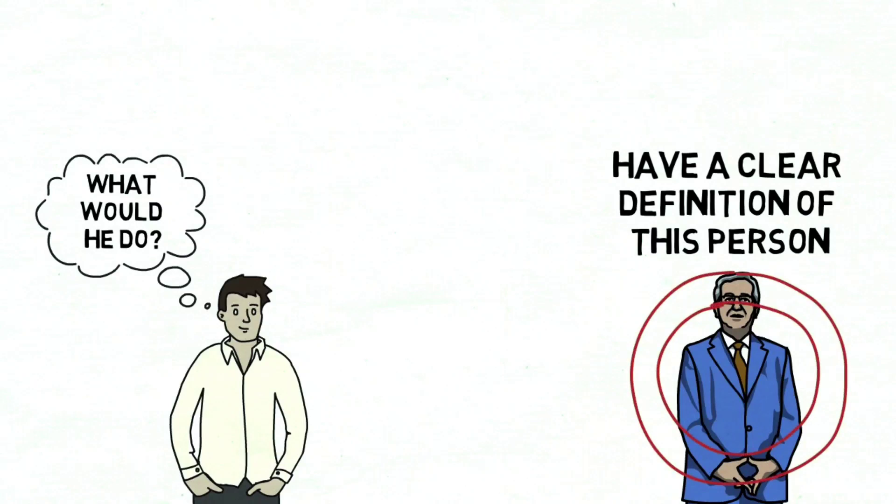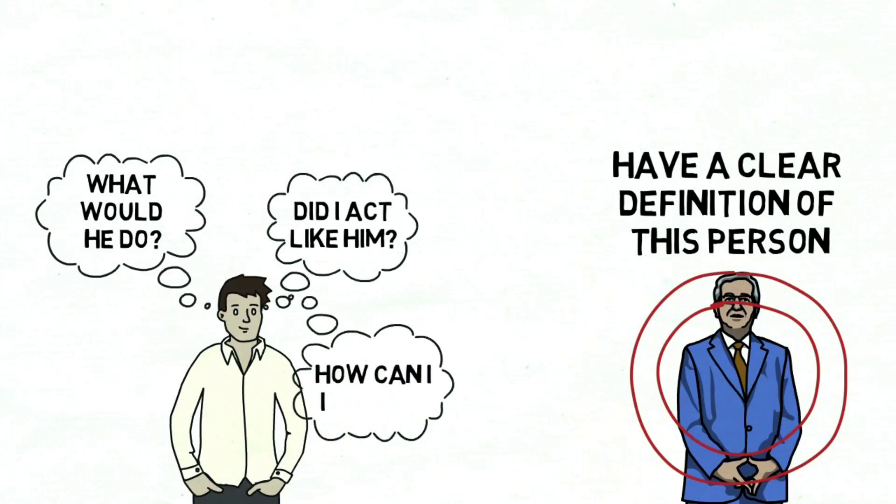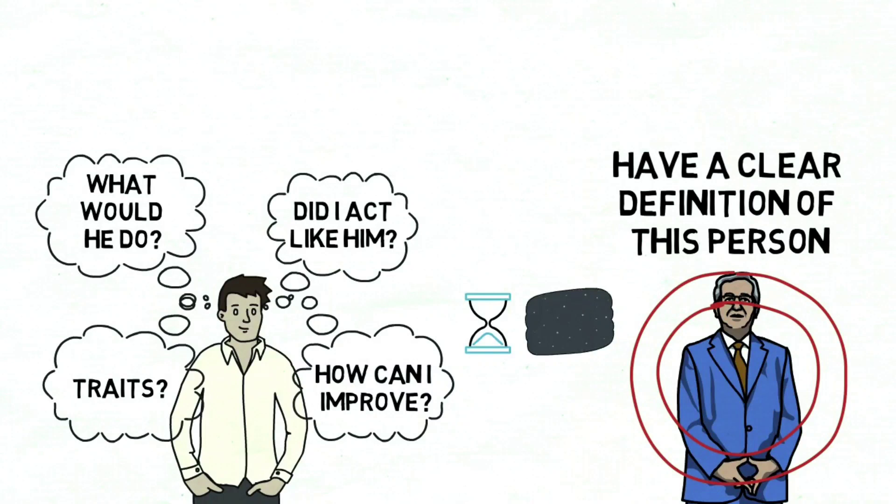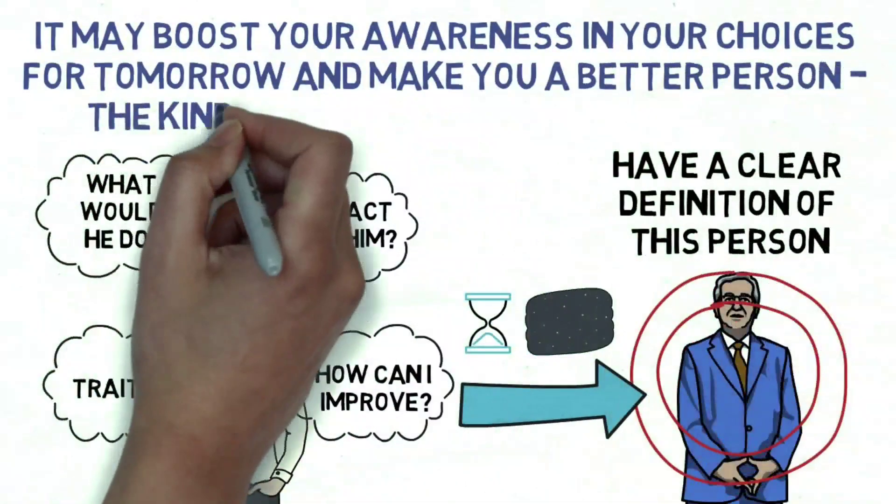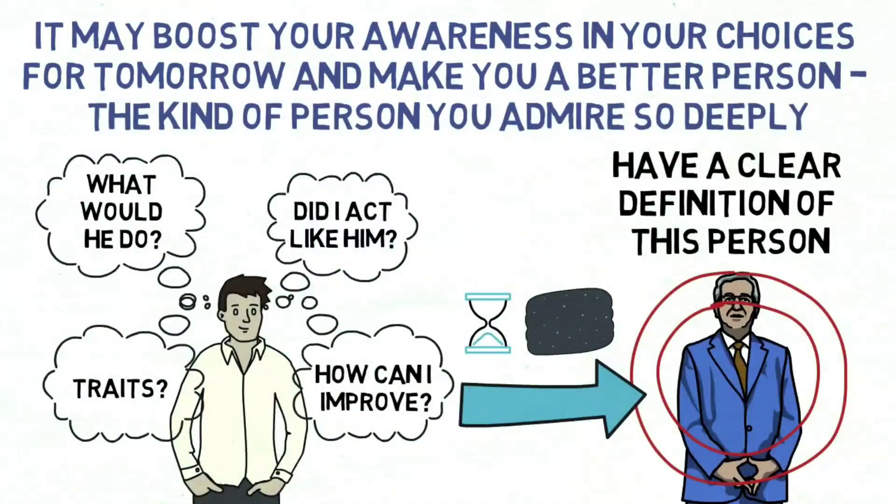As part of your evening routine, take a few minutes to recall your role model and ask yourself, did you act as your role model would? In what ways can you improve tomorrow so that your life is more in line with your role model? What traits does your role model have that you saw in yourself today? Incorporating a few minutes in your evening routine to consider the situations you experienced today and whether you reacted as you believe your role model would have may boost your awareness in your choices for tomorrow and make you a better person, the kind of person you admire so deeply.